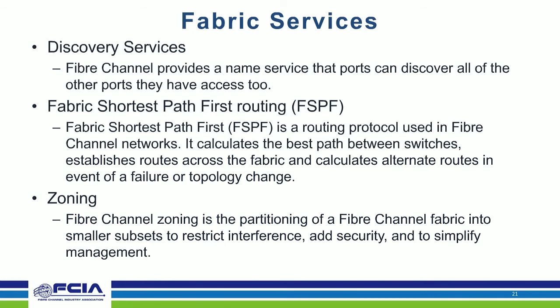A quick overview of fabric services — not listing all of them, just focusing on how easily they work and the benefits they bring for high-availability, high-performance storage access. The first is discovery services: Fiber Channel provides a name service so that when a new port logs in or connects to the fabric, it can discover all other ports it has access to. This is very useful for scanning storage, finding targets, setting up new ones, and seeing if they migrate.